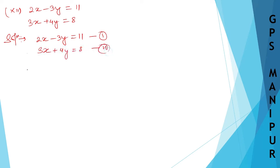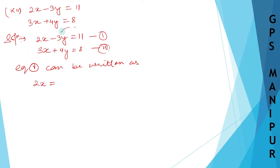Equation number one can be written as: 2x is equal to 11 plus 3y, transferring the minus 3y to the other side. So x will be equal to 11 plus 3y divided by 2. This is equation number three.